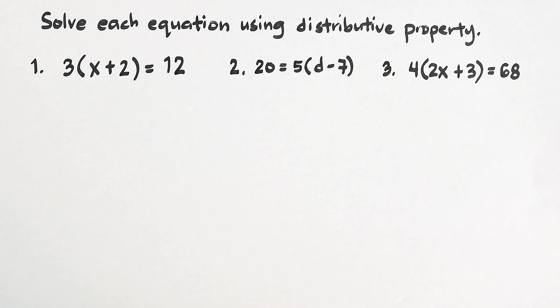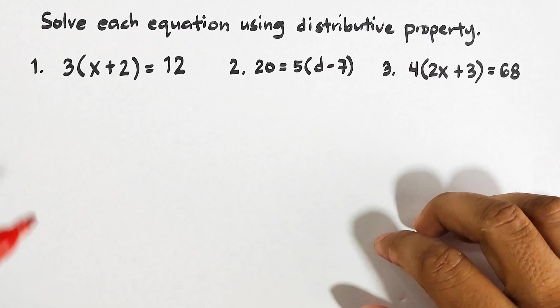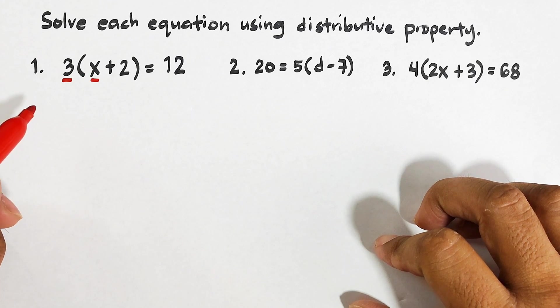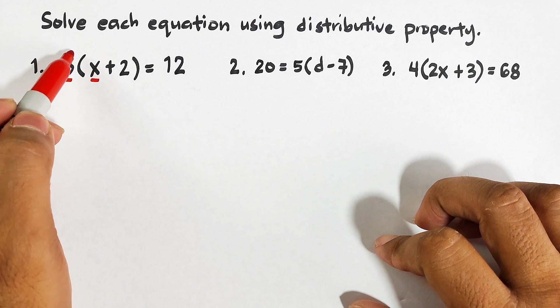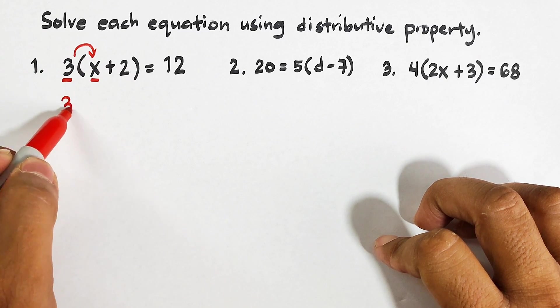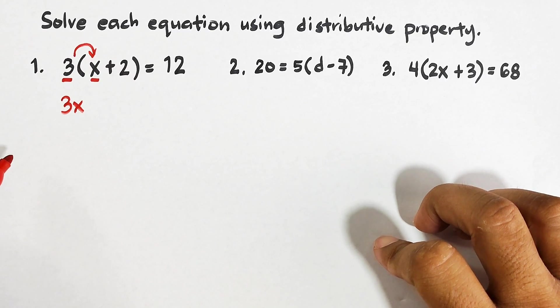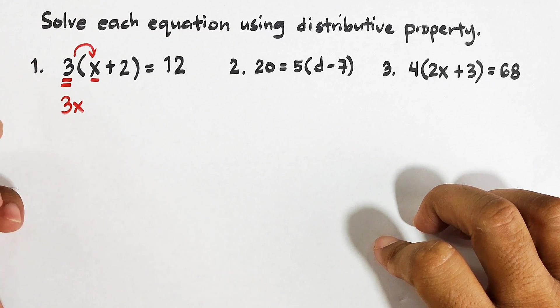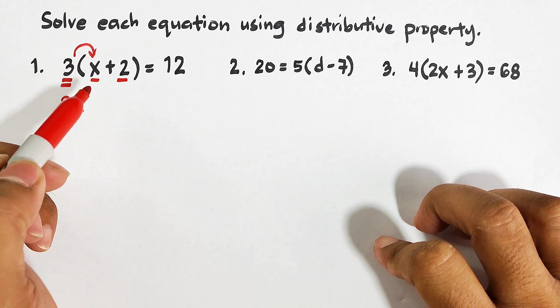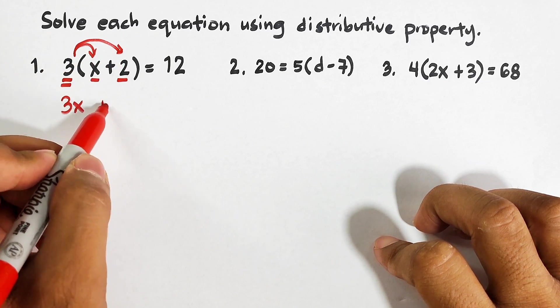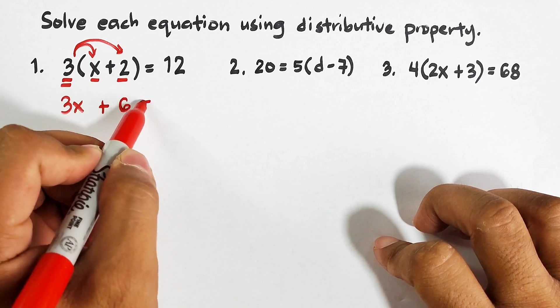Now let's start using the distributive property. First, we will multiply 3 on the first term of the parentheses, or the grouping symbol. We have 3 times x and that would be 3x. Second, this 3 will also be multiplied to the second term in the grouping symbol. That is 3 times 2, which would be plus 6, is equal to 12.